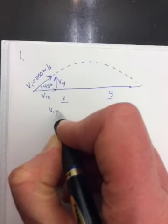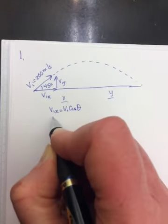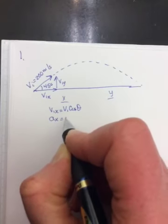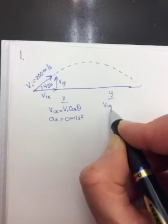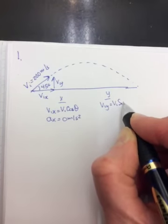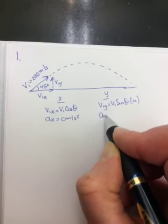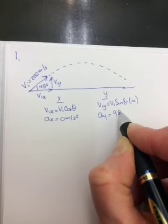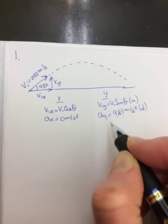We know vi_x is vi cos theta, which we could actually find. We know a_x is zero. We know vi_y is vi sin theta, which we could actually find, and that's up. And we know a_y is 9.81 meters per second squared, and that's down.